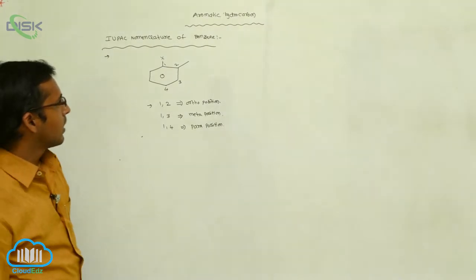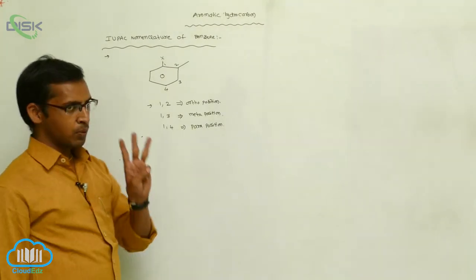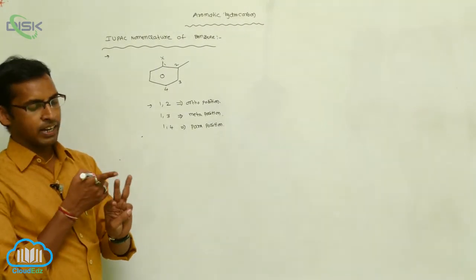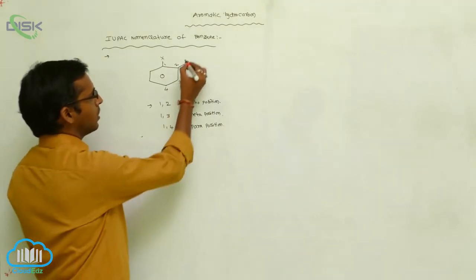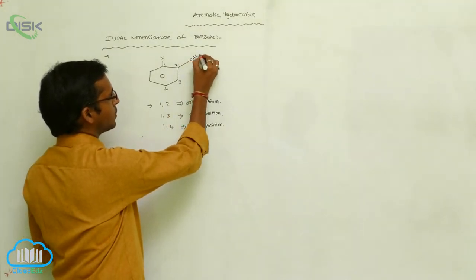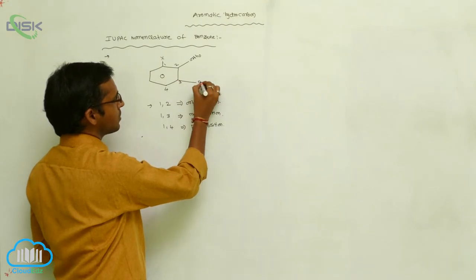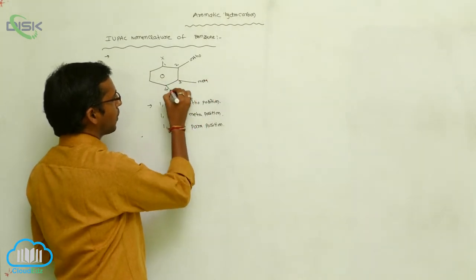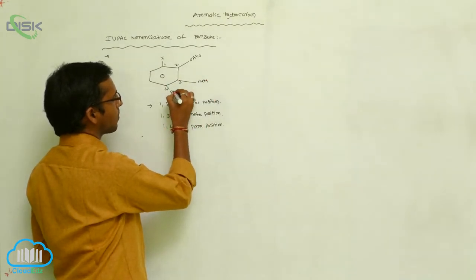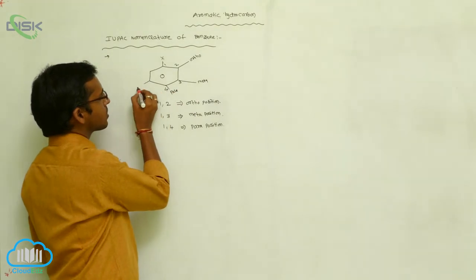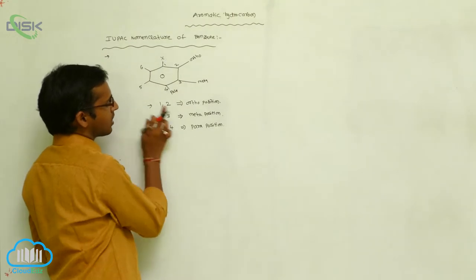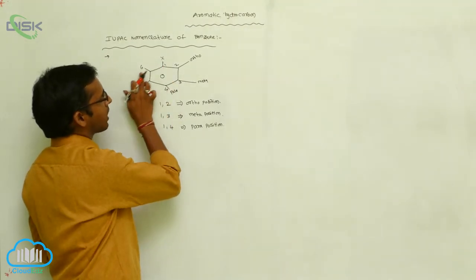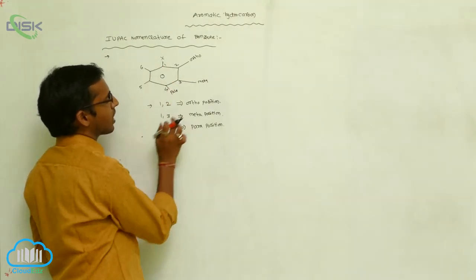So in benzene, 3 positions are there: ortho, meta, and para. 1,2 position is called ortho position. 1,3 position is meta position. Automatically, the 1,4 position is para position. Position 5 and 6 are also considered: 1,5 is also meta position, and 1,6 is your ortho position.